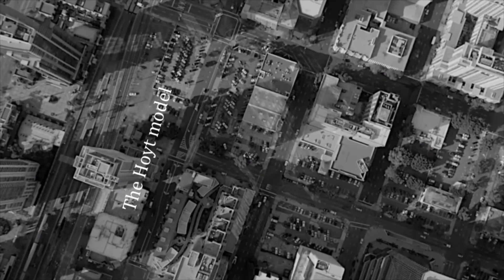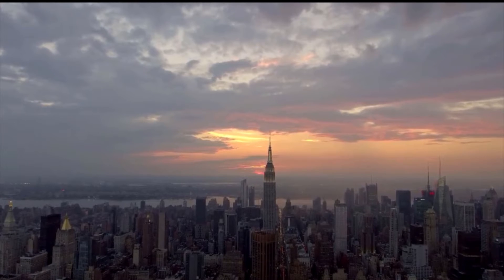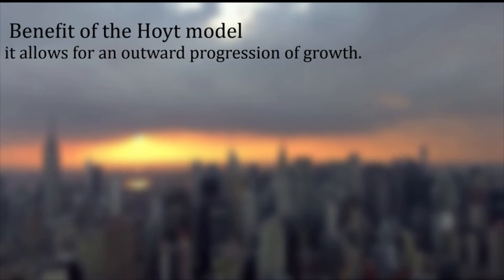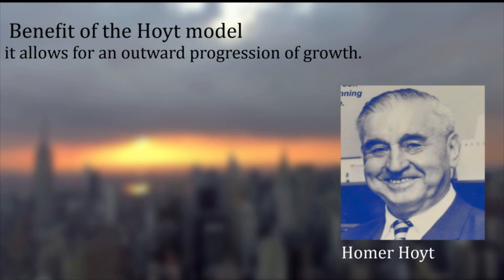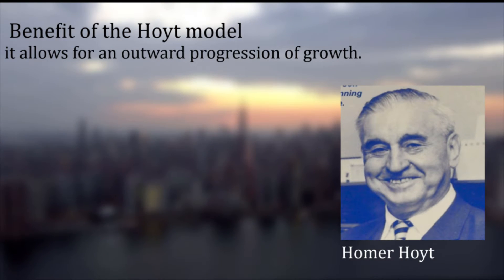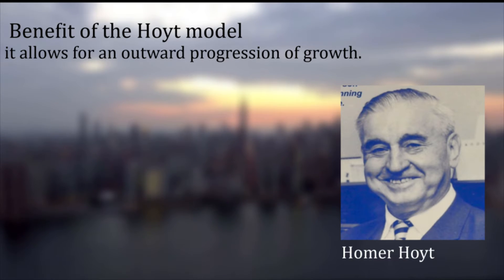Alternatively, the more accurate model for urban land use is Homer Hoyt's sector model, proposed in 1939. It is a modification of the Burgess model of city development. The benefits of applying this model include the fact that it allows for an outward progression along roads. Homer Hoyt was an American economist who conducted path-breaking research on land economy, developing the Hoyt sector model.